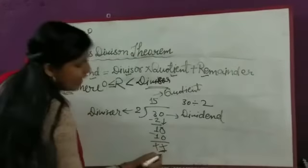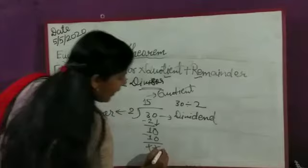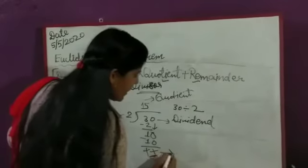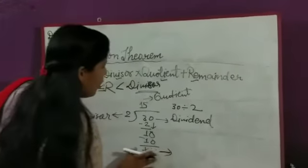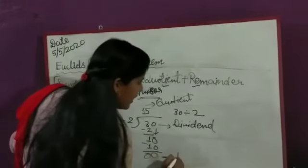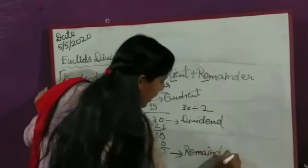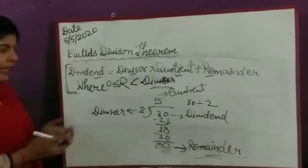And whatever is left after the division, what is undivided, what cannot be divided completely, is the remainder. Zero is also possible as a remainder. I hope everything is clear to you.